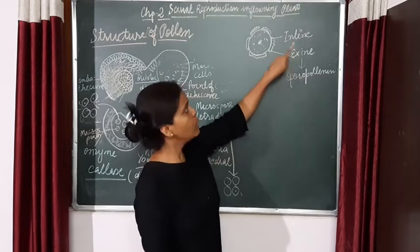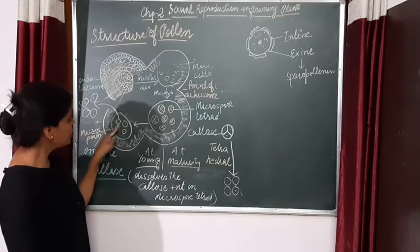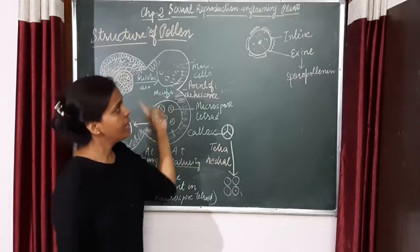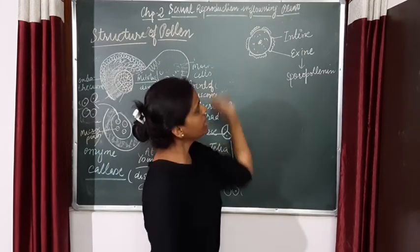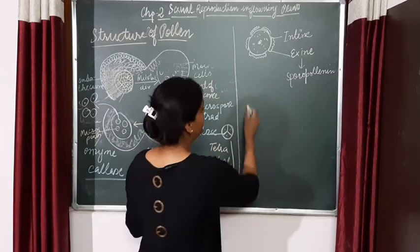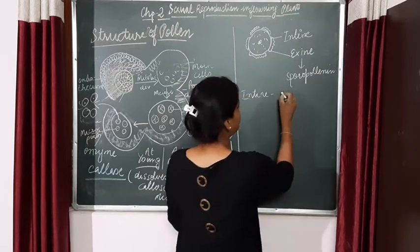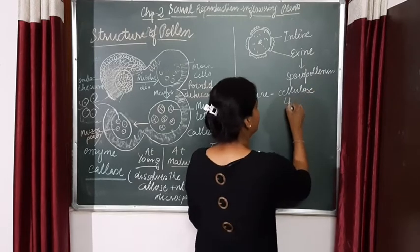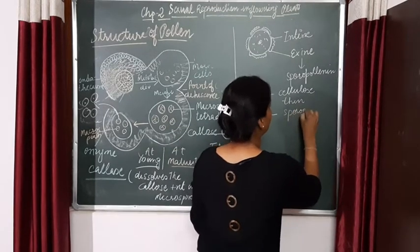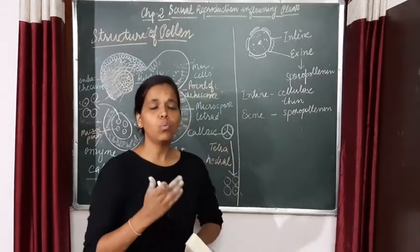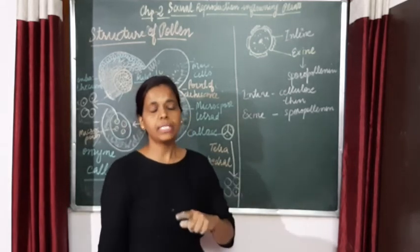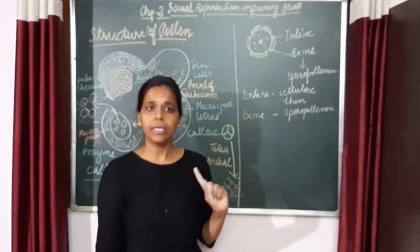The outer layer is called exine and the inner layer, which is thin, is called intine. One more thing to remember: intine is formed of cellulose and it is a thin layer, while exine has a covering of sporopollenin. Sporopollenin is the world's highest resistant protein known till now — it is very resistant to withstand any kind of adverse conditions, high temperature, or high acid-type conditions.